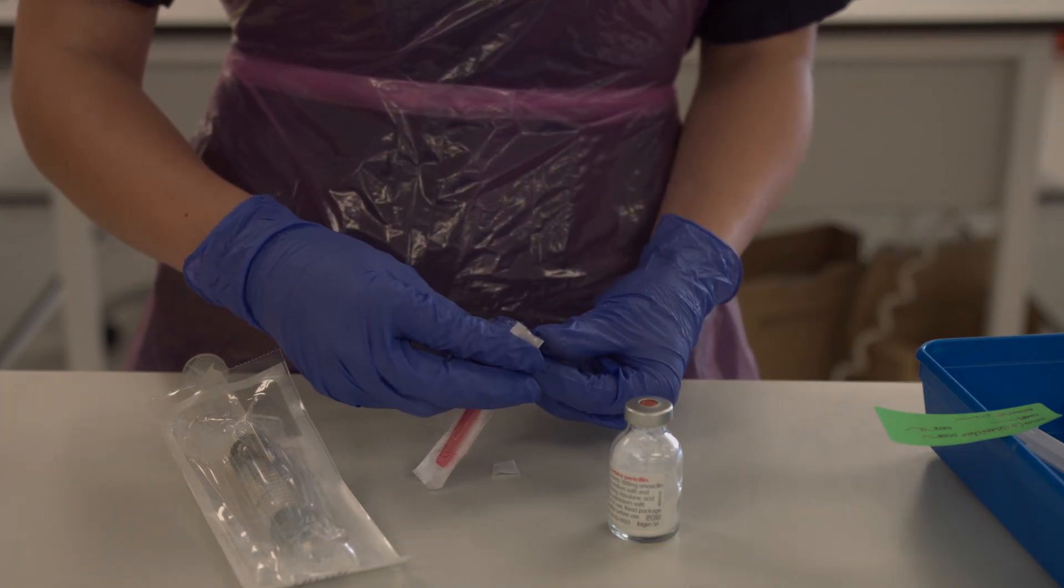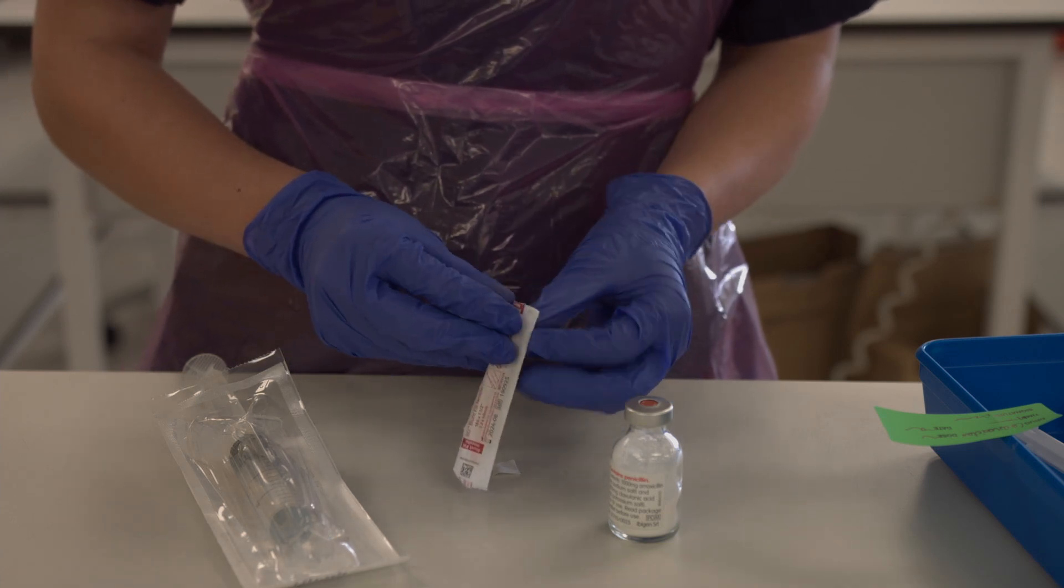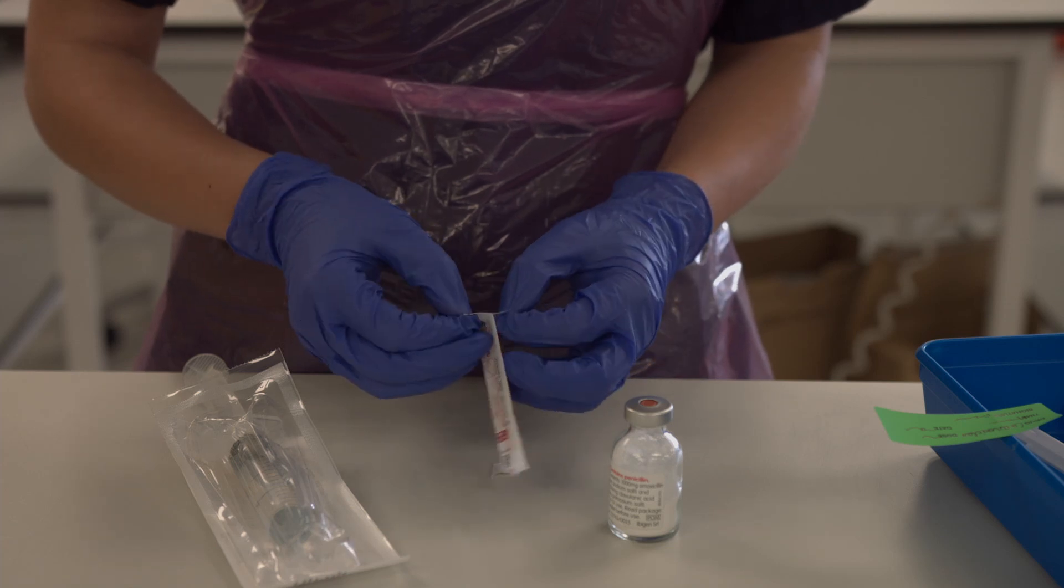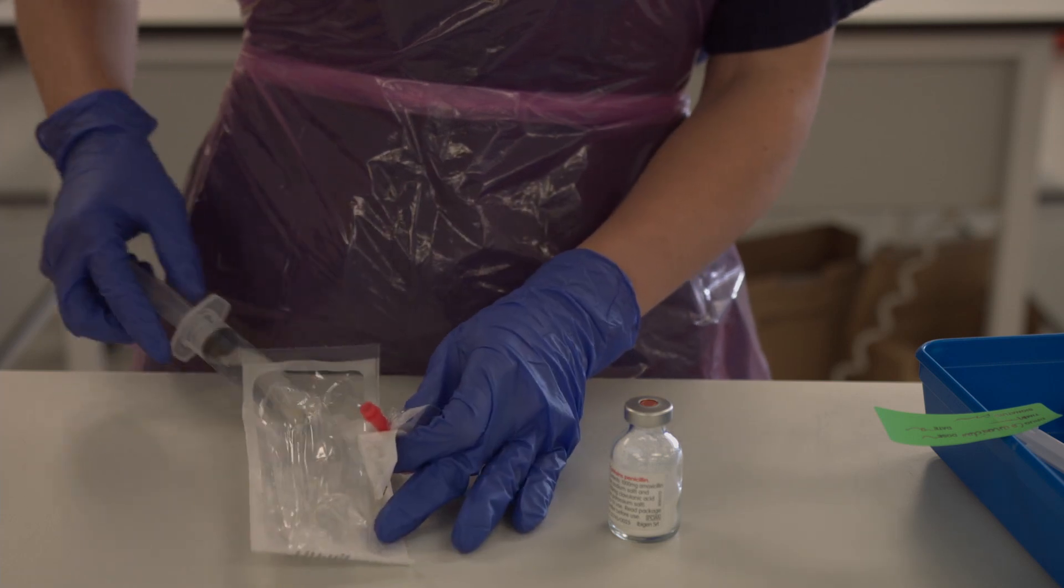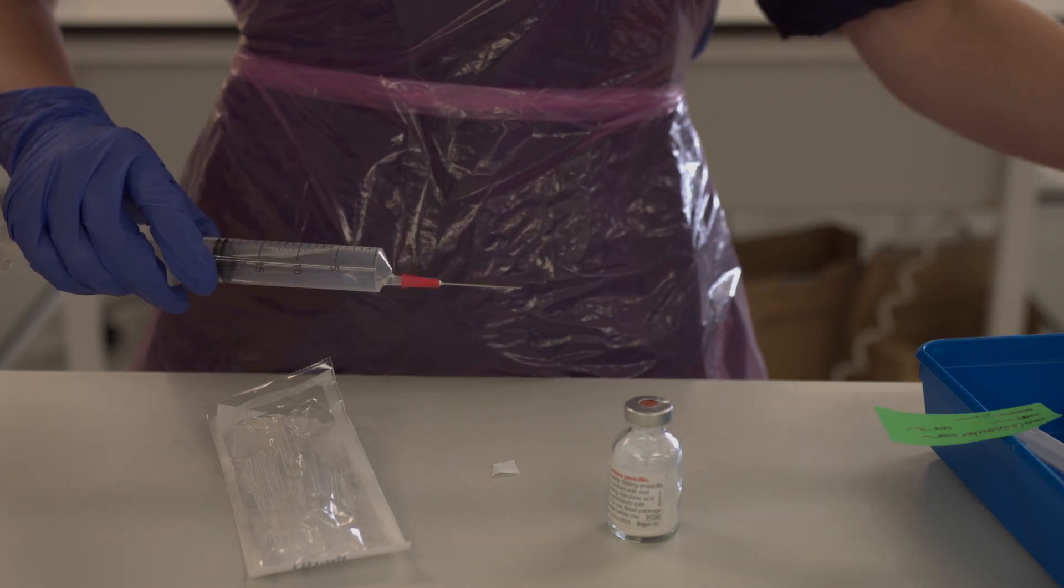You can then open up your second plump fill needle and attach it to the syringe. Again attach with a slight twist and remove the needle cap by pulling straight out.